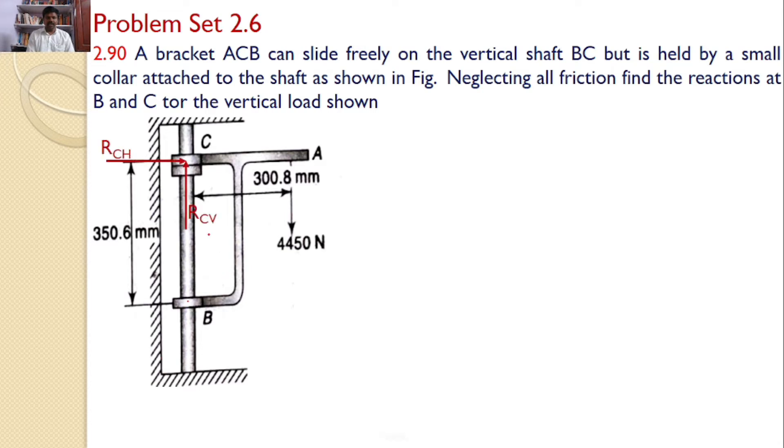As we discussed, two reactions are developed at C: RCH and RCV, and only one reaction will develop RB. Let us assume these directions are the initial assumed directions and an applied force of 4450 Newtons.